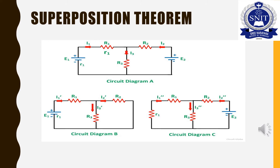We will find the current through R3. It will involve solving using KVL. The current I3 will be equal to I3' plus I3''. That is the superposition theorem in brief.